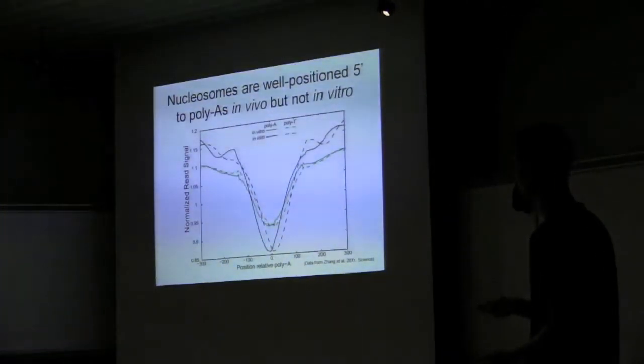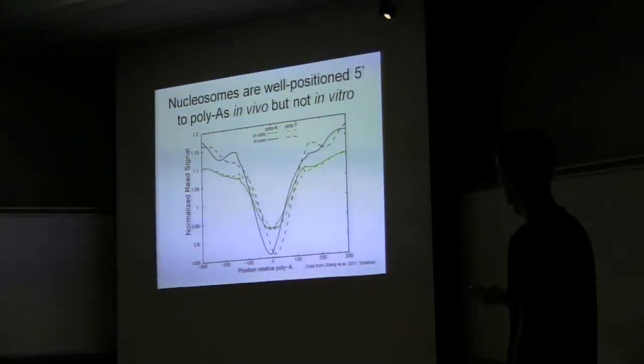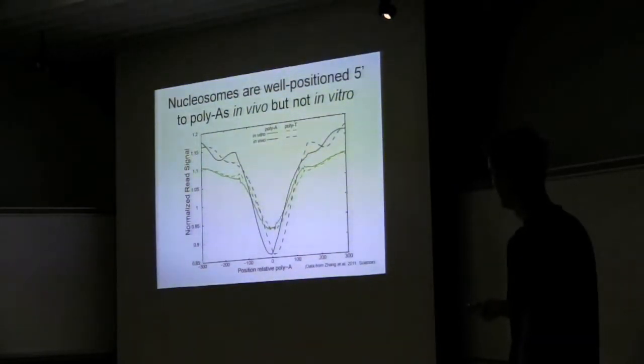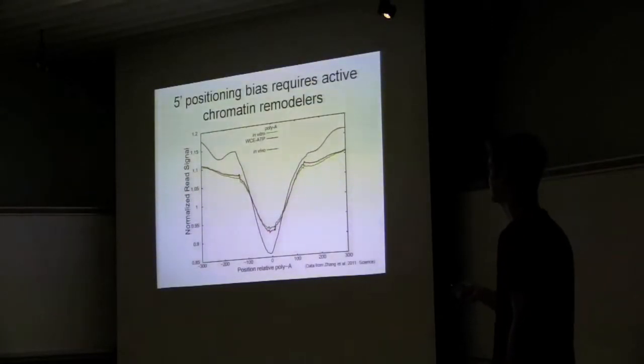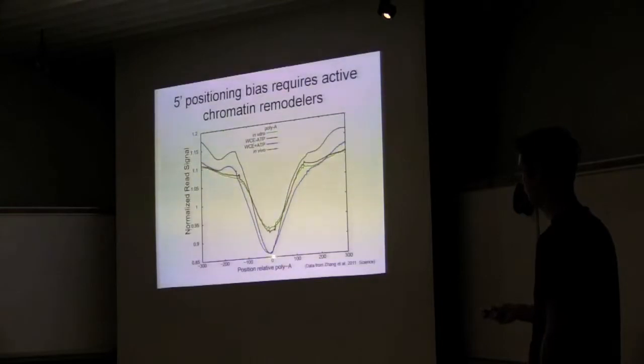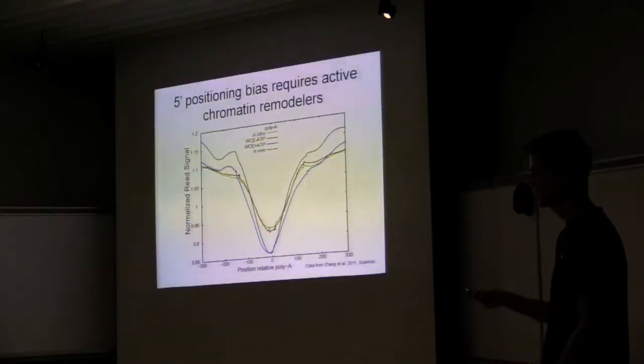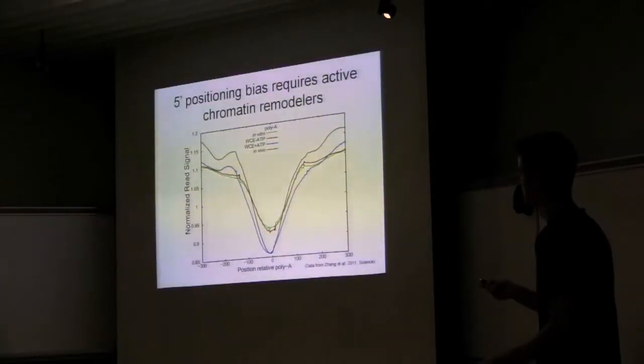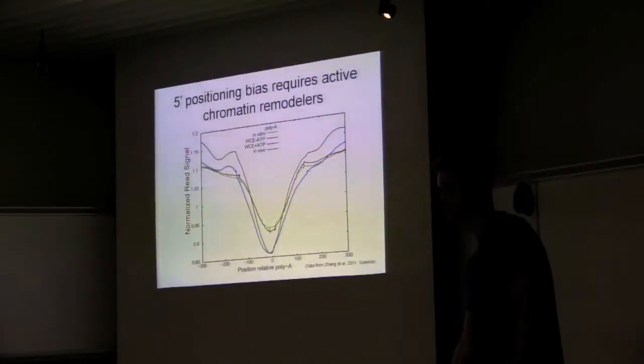And if you take the same data for poly-T sequences, which actually just amounts to mirror imaging the data here, you can appreciate how relatively symmetrical it is in vitro, but how biased it is in vivo. So next I looked to see if chromatin remodelers could be responsible. So this is the same data I showed before where whole cell extract is added but no ATP. And you can see that looks very much like the in vitro data. But when they add ATP, now suddenly you see this five prime bias to the nucleosome-free region and the upstream nucleosome. So it looks from all this like there is some bias, some strand bias to nucleosome occupancy around poly-A elements.